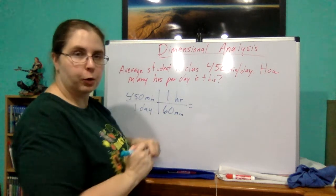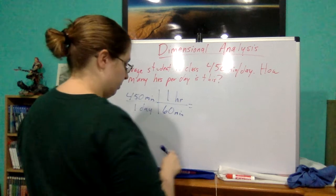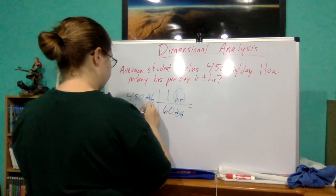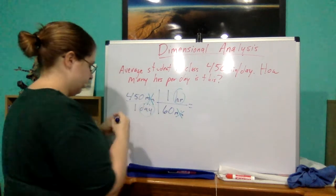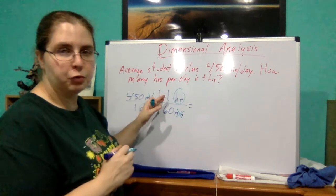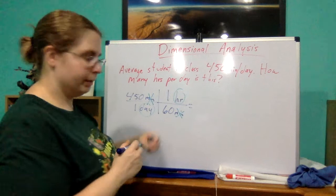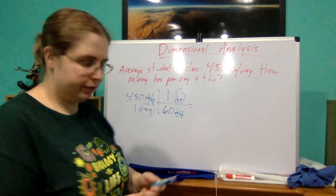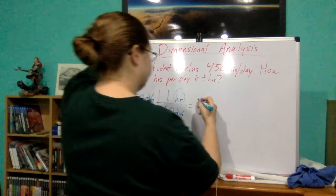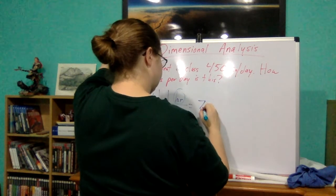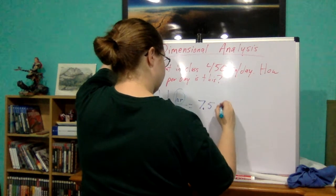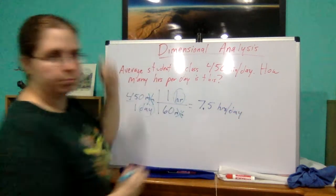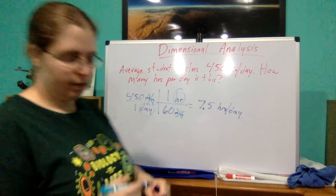So if we go through and we do the math, the minutes will cancel out. We're left with hours per day. So it would be 450 times 1 divided by 1 times 60. So 450 divided by 60 would give us 7.5 hours per day.